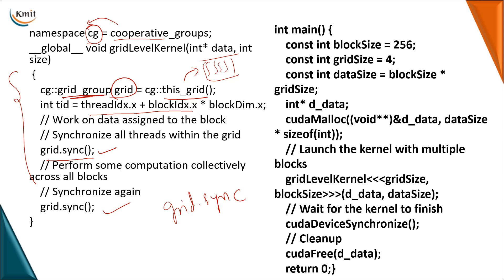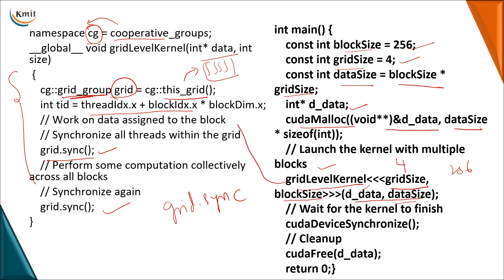When using grid.sync(), all blocks pertaining to a particular grid are synchronized. In the main method, we declare the block size, grid size, and data size used for calling the function. The device data is allocated using cudaMalloc based on data size, which is block size multiplied by grid size — block size is 256 and grid size is 4. Depending on that, the amount of memory is allocated to the device data. The kernel function 'grid_level_kernel' is then called with 4 blocks of 256 threads each, passing device data and data size as arguments.